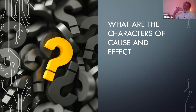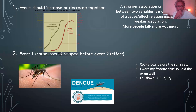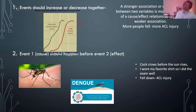So the first thing we try to understand is: what does it mean to say there is a cause and effect relation? How will I know there is a cause and effect relation? There are many ideas for this. The first point most of us understand is that two events should be related — if two events are related, there must be some relation.